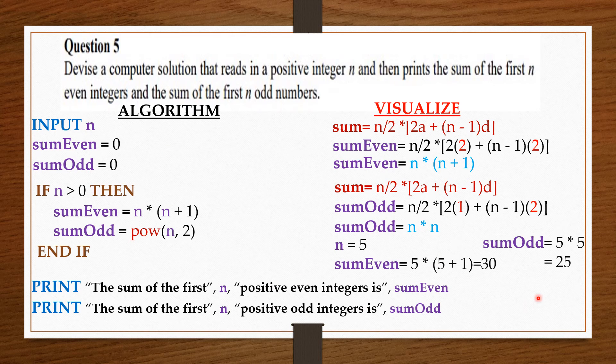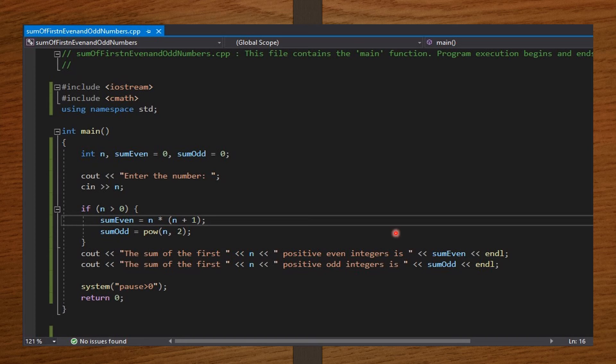So in the main function, because I'll be using the power function, I declared the cmath library. Now I declared n, sumEven, and sumOdd to be integers and initialized sumEven and sumOdd to be zero.